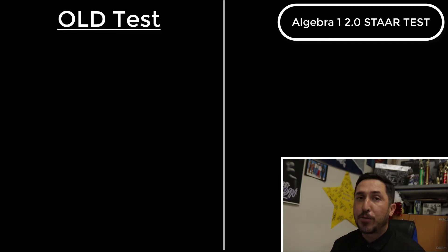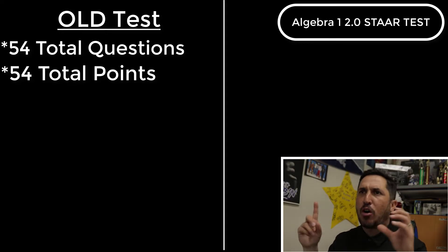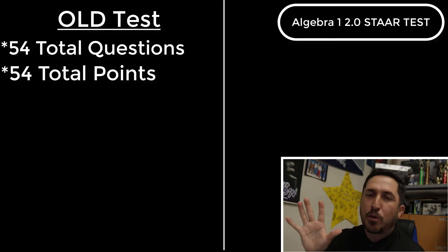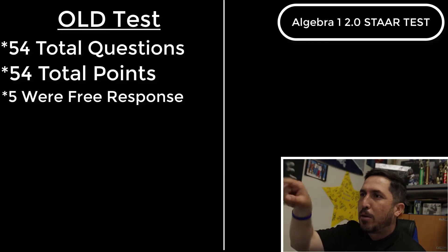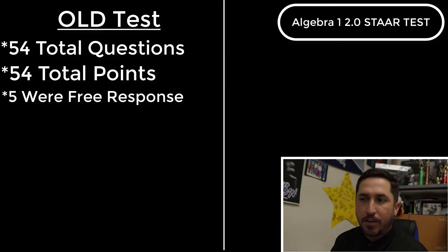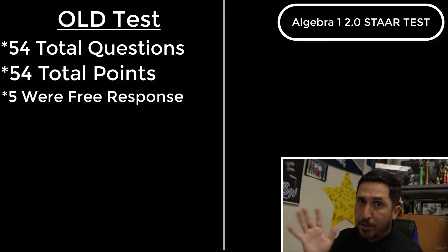The old school test had 54 questions. Each one of those questions were worth one point each — 54 questions, all equally weighted. Only five of those questions were free response, like 'Hey, what's the y-intercept here? Bubble in the four.' or 'What's the slope here? Find the slope, bubble in negative 2.5.' That's the extent of the free response they had in the old school stuff, and there were only five of those.